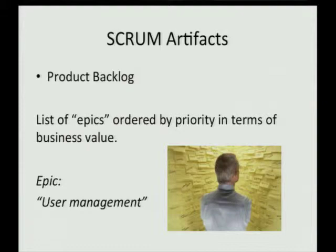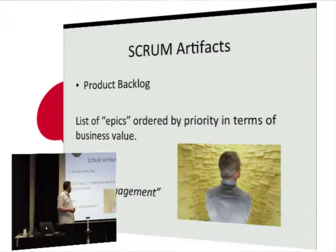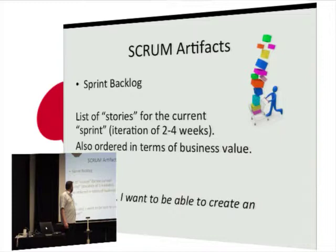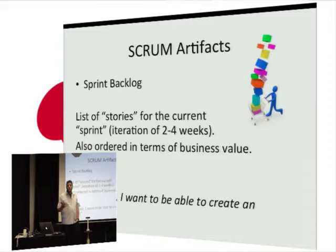For Scrum artefacts, you've got the product backlog. This starts as a list of what we call epics, always ordered by priority in terms of business value. An example epic could be implementing user management for an application. Then you've got the sprint backlog — a list of stories that fit within a sprint. An example story: as a user, I want to be able to create an account.